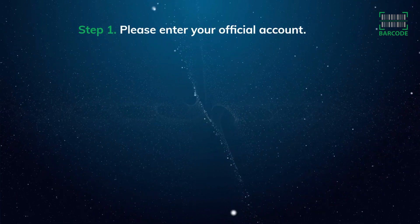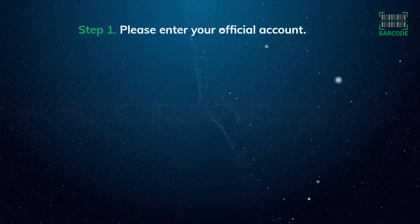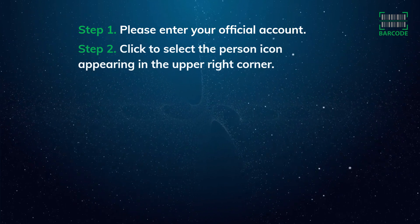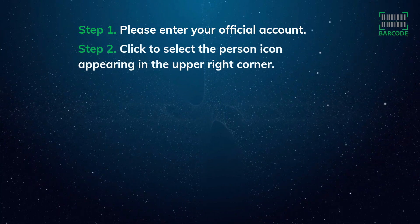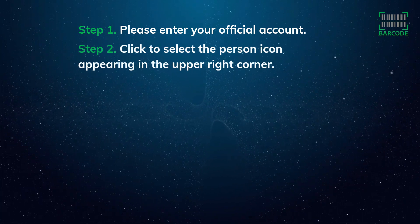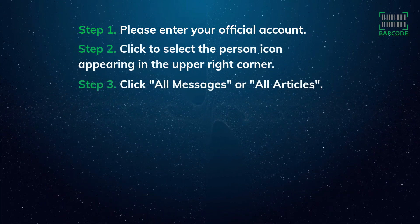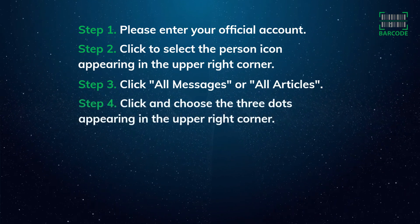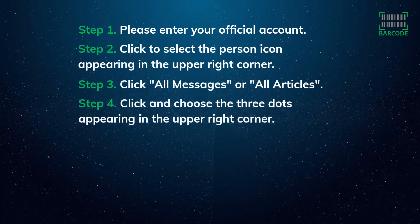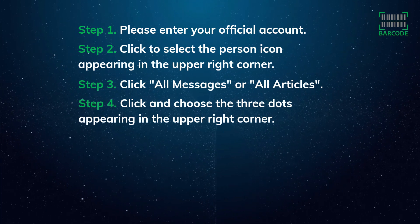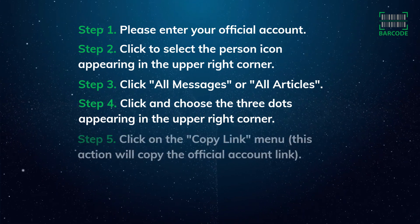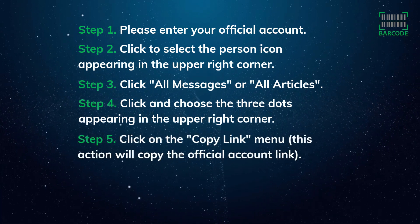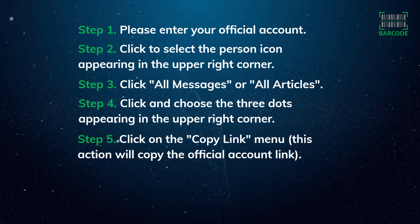Step 1: Please enter your official account. Step 2: Click to select the person icon appearing in the upper right corner. Step 3: Click all messages or all articles. Step 4: Click and choose the three dots appearing in the upper right corner. Step 5: Click on the copy link menu. This action will copy the official account link.